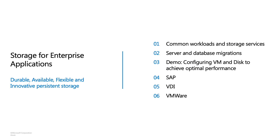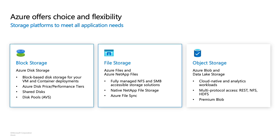Today, I'm going to briefly cover which storage services we have and how they help enterprise workloads. We're going to focus more on server and database solutions, and we'll have a database demo using a Cassandra DB retail example. We will talk about SAP, VDI, and VMware workloads. We have block storage solutions, file services, and object storage. Object storage will be covered more in HPC and Cloud Native sessions, so we're focusing this session on block storage and file storage.